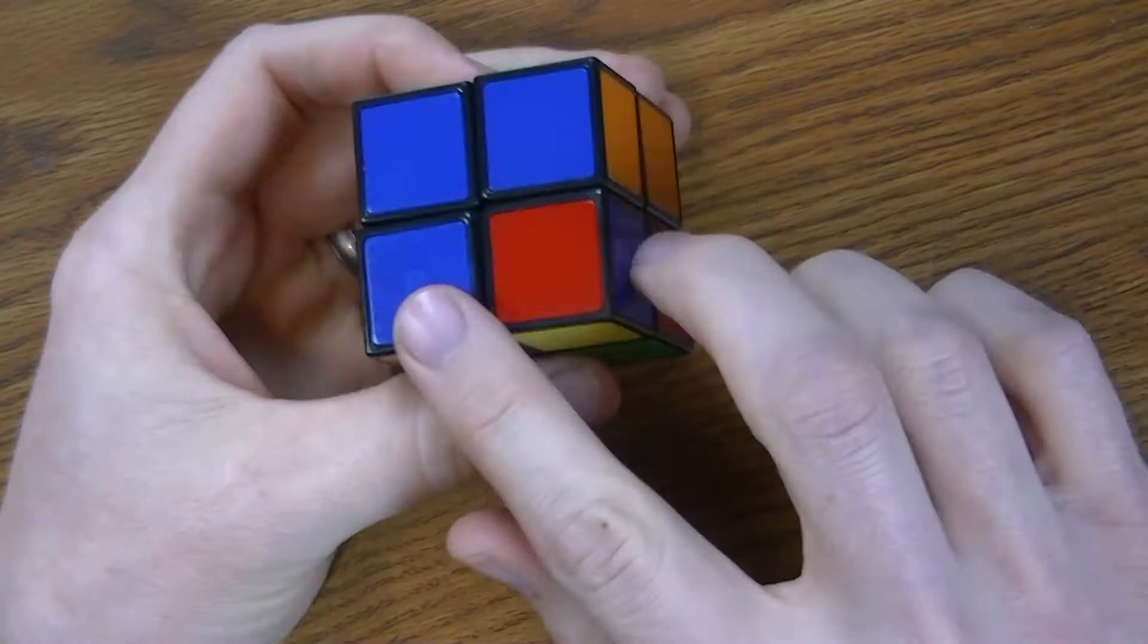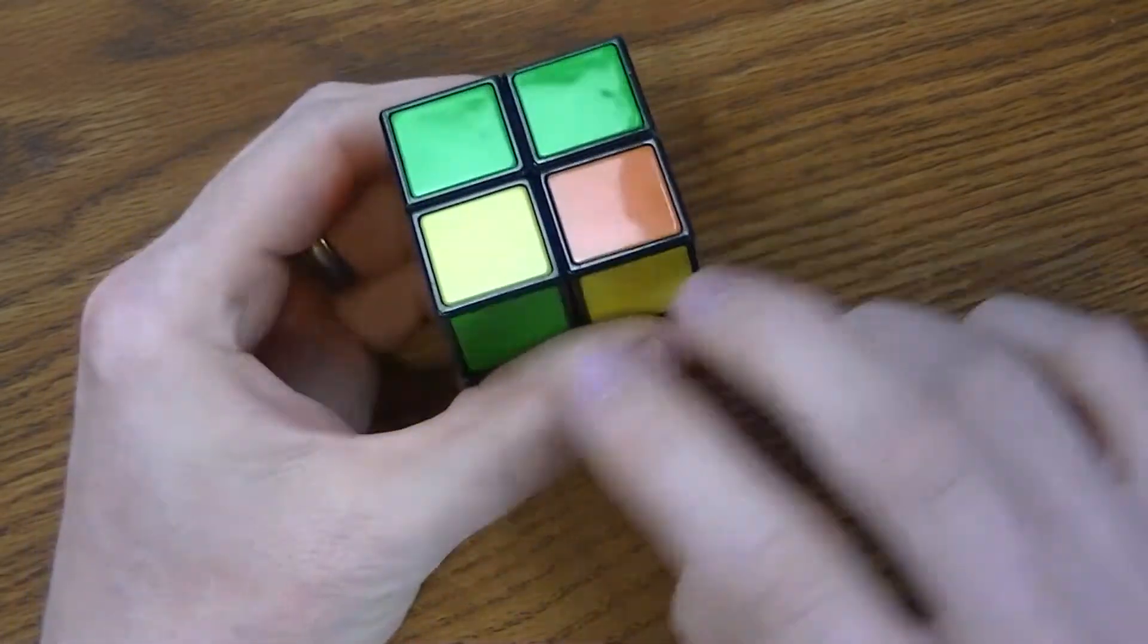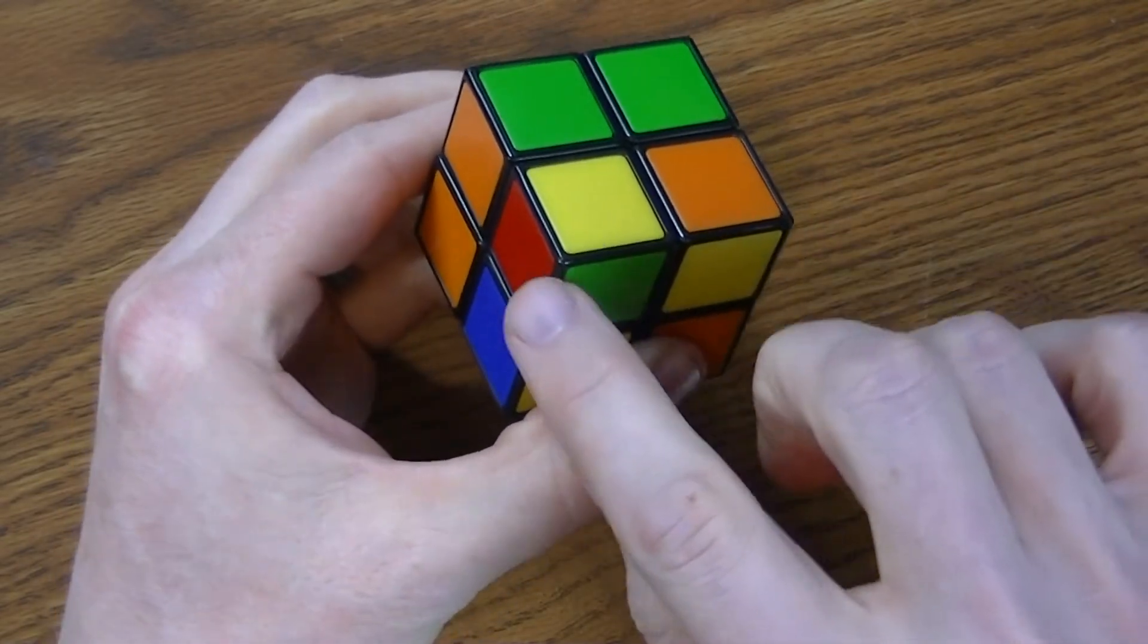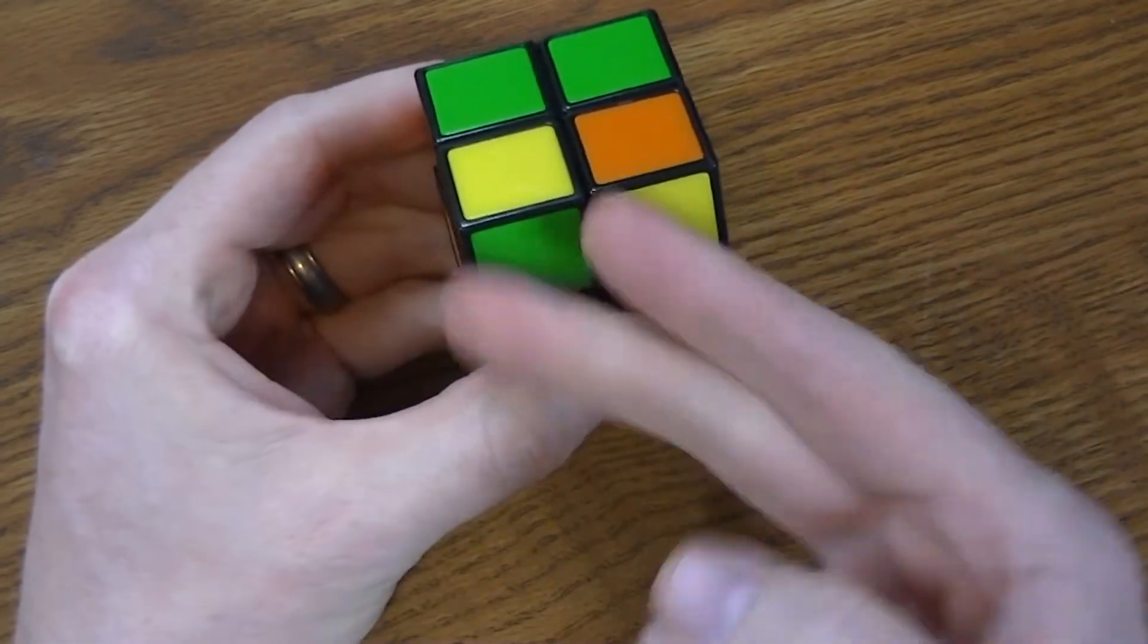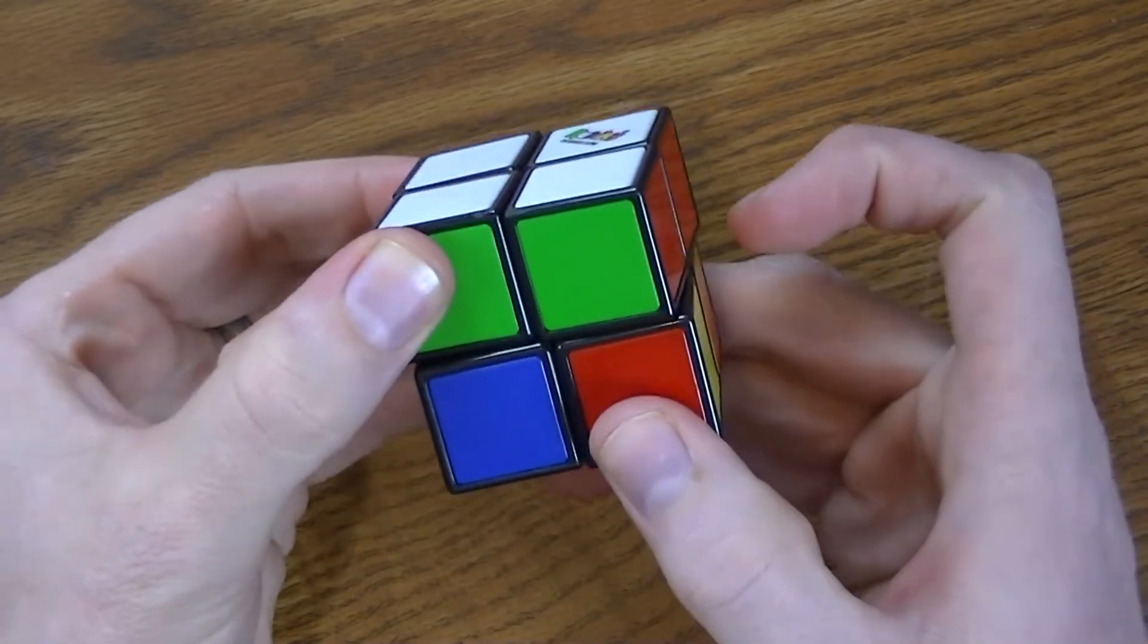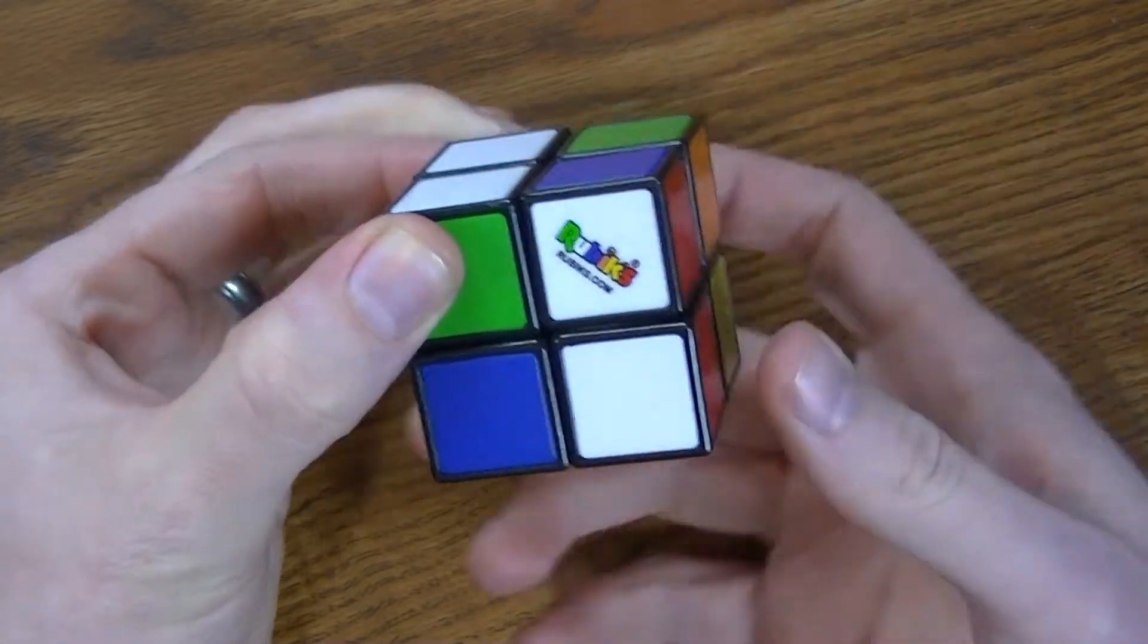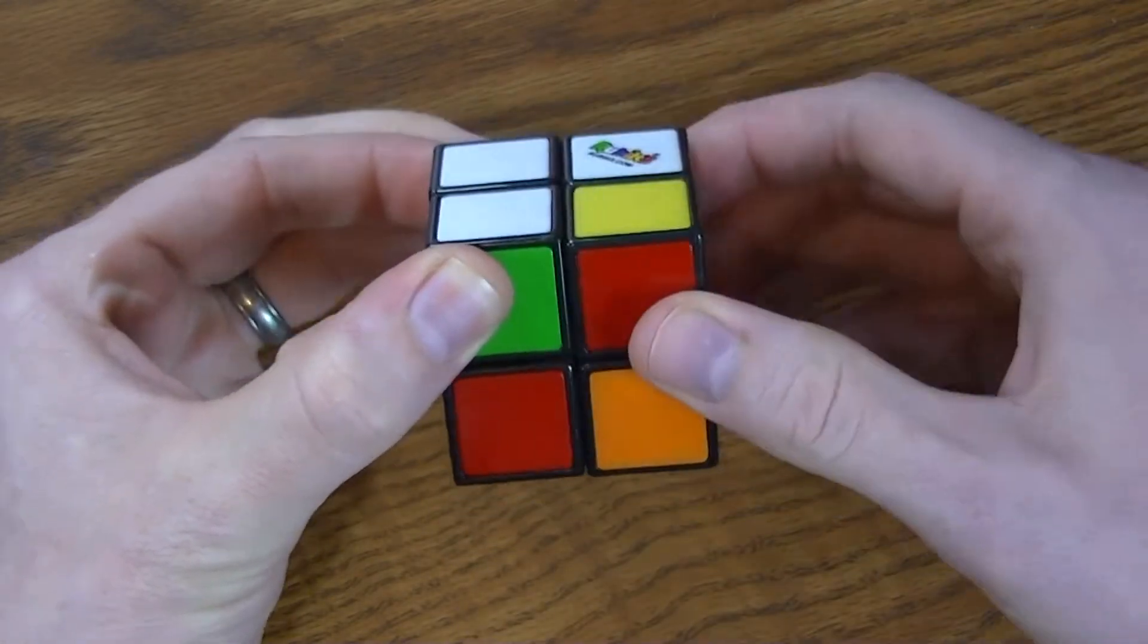That will also put the blue and blue pieces right underneath blue and blue. So I need to switch these two, so that my green-red goes over to here, and my green-orange goes over to here. So I want to switch those two. You turn the down part clockwise, the right counterclockwise, then the down comes back counterclockwise, and the right goes back.